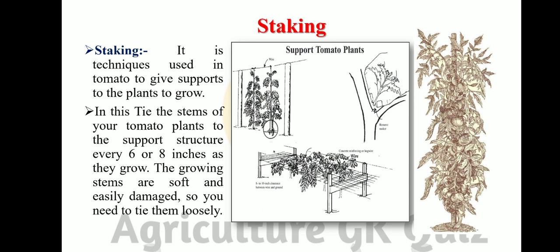Stacking in tomato: Stacking is a technique used in tomato to give support to the plants as they grow. Tie the stem of the tomato plant to a support structure every six to eight inches as they grow. The growing stems are soft and easily damaged, so they need to be tied loosely. In the photograph, a supportive system helps the tomato grow upright.